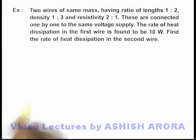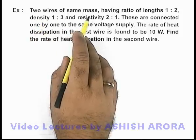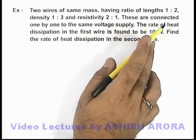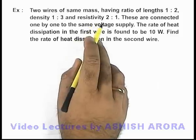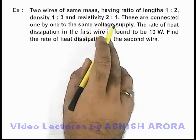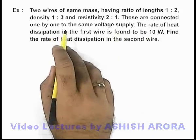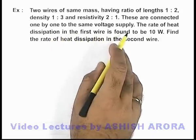In this example we are given two wires of same mass having ratio of lengths 1 is to 2, density ratio 1 is to 3, and resistivity ratio 2 is to 1. These are connected one by one to the same voltage supply.